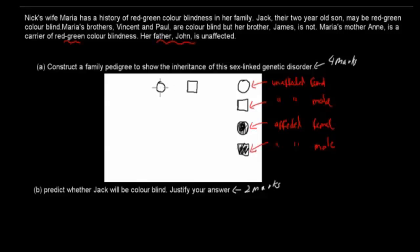Some people, when they draw a carrier, they do half of the circle filled in like this. You can or you cannot — it doesn't really matter that much. But this is unaffected; she doesn't have colorblindness, but she is a carrier. And these two will have their babies — obviously four kids as the question says. This is the marriage line, and this is the descendant line.